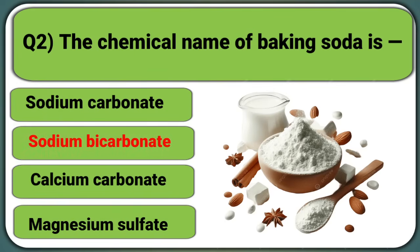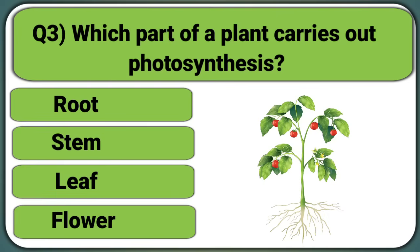The chemical name of baking soda is: Sodium Carbonate, Sodium Bicarbonate, Calcium Carbonate, or Magnesium Sulphate. Answer: Sodium Bicarbonate. Which part of a plant carries out photosynthesis? Root, Stem, Leaf, or Flower. Answer: Leaf.